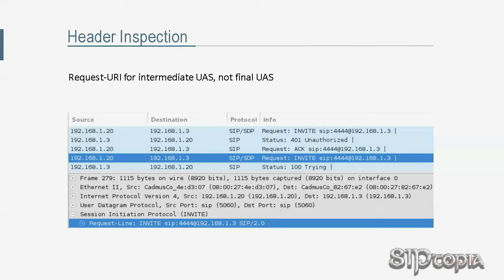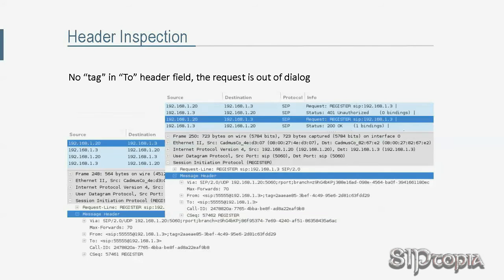Similarly, if the intermediate UAS does not have anywhere to send the request based on the Request-URI value, Tarzan's SIP phone could receive a 404 Not Found response. Another step taken as part of header inspection is listed as 'merged request' in RFC 3261, but we will give it a more explanatory name: loop detection.